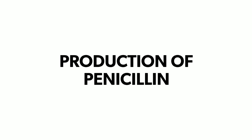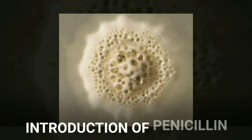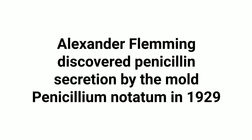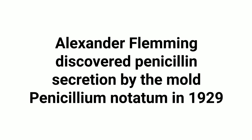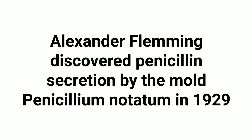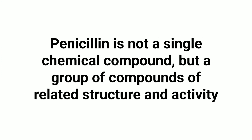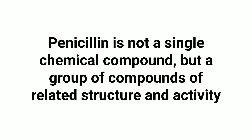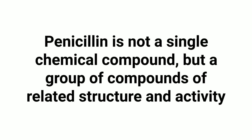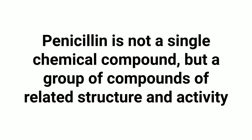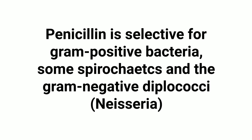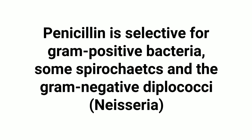Today we are discussing the industrial production of penicillin. Alexander Fleming discovered penicillin secretion by the mold Penicillium notatum in 1929. Penicillin is not a single chemical compound but a group of compounds of related structure and activity. Penicillin is selective for gram-positive bacteria, some spirochetes, and the gram-negative diplococcus, e.g., Neisseria.